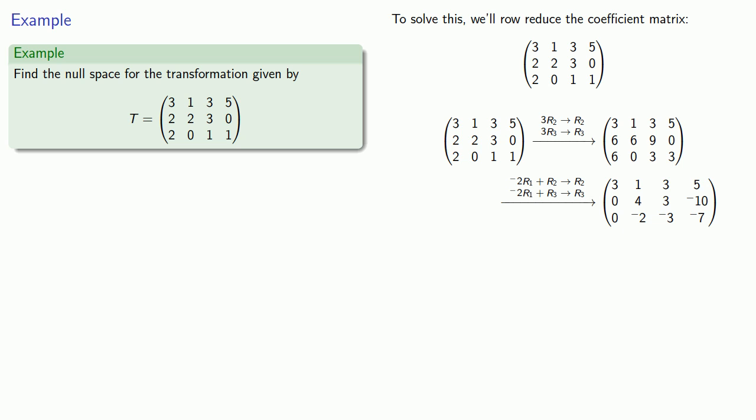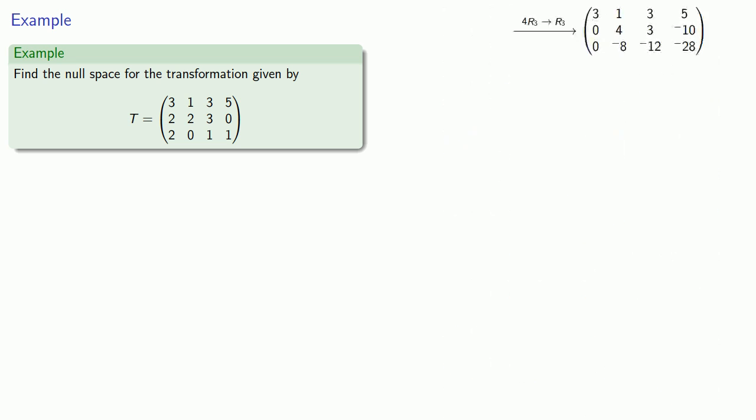Moving on to the second row, the pivot is 4, so we'll multiply the third row by 4. That gives us a new third row. Now we can multiply the second row by 2 and add it to the third to get a zero below the pivot.